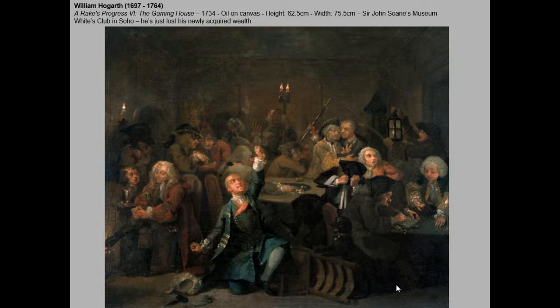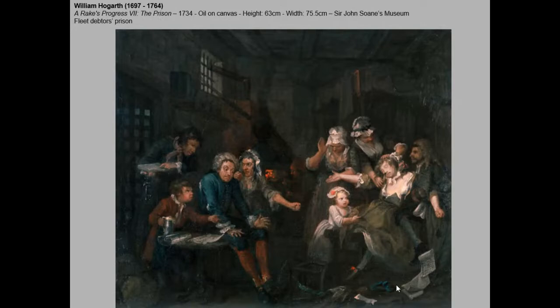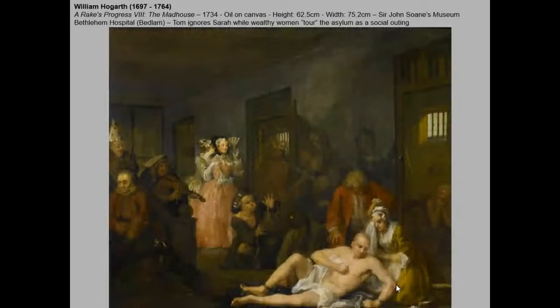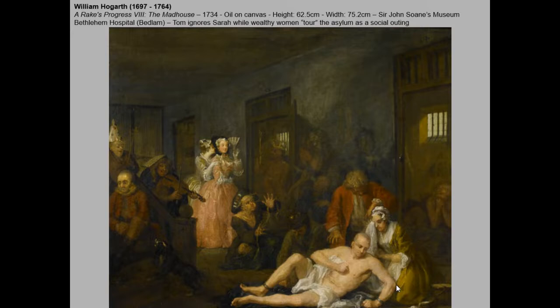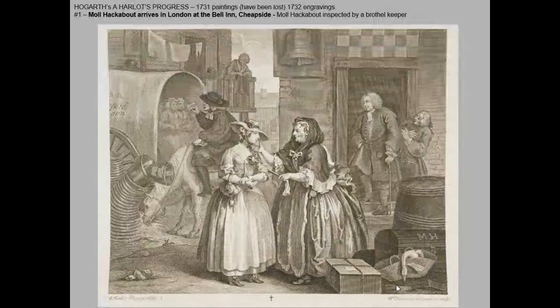As soon as he has the money, he starts to lose it. This scene shows his night in the gaming house, wasting all he gained from the marriage of convenience. He then winds up in a debtor's prison. And now that he's imprisoned, he goes mad. You can see wealthy women touring this insane asylum — a horrible practice — taking entertainment from the behavior of these lost souls. His rejected potential bride is still there trying to help him, and he's still ignoring her even at this last stage.